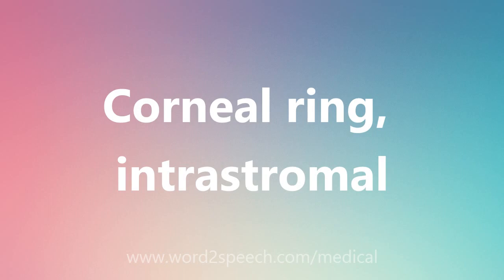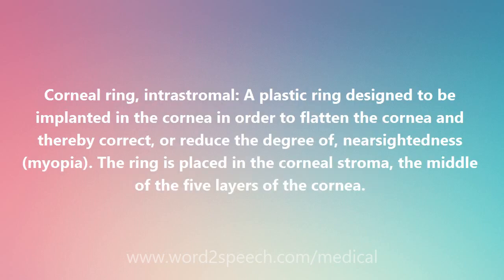Corneal Ring, Intrastromal: a plastic ring designed to be implanted in the cornea in order to flatten the cornea and thereby correct, or reduce the degree of, nearsightedness — myopia. The ring is placed in the corneal stroma, the middle of the five layers of the cornea.